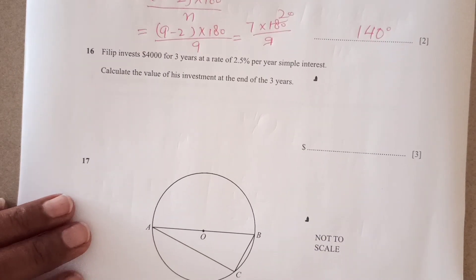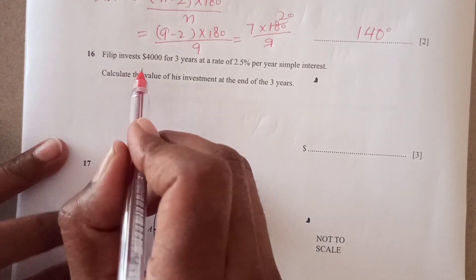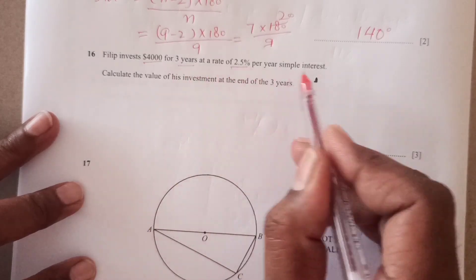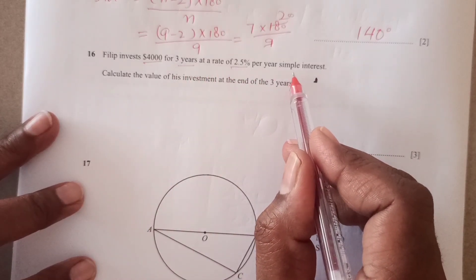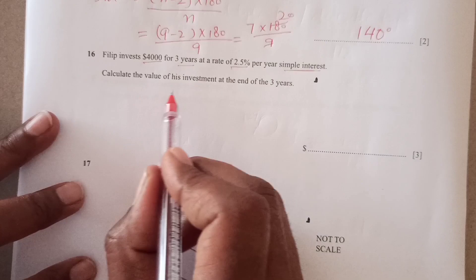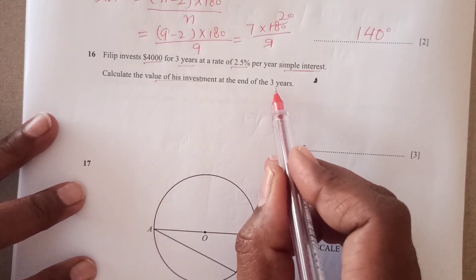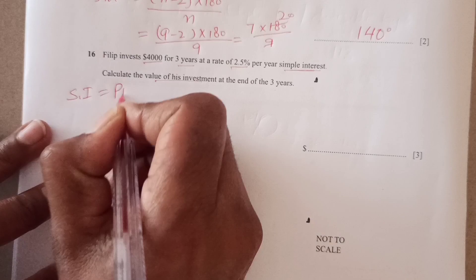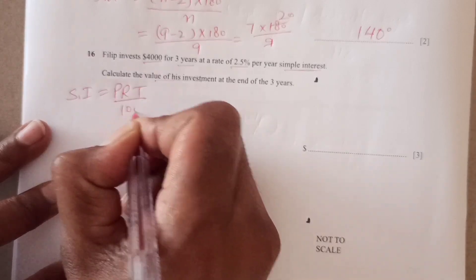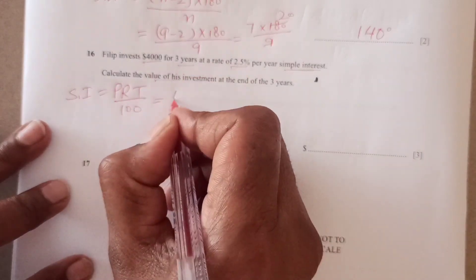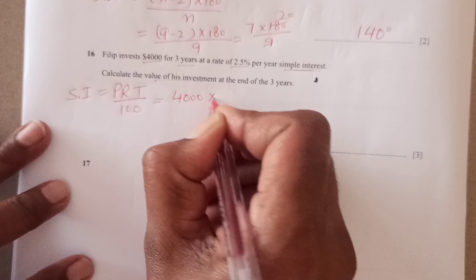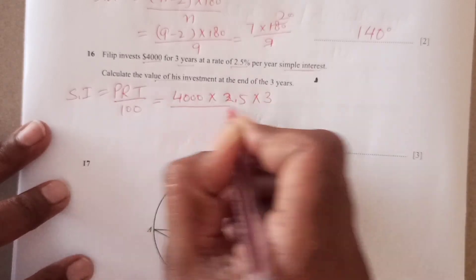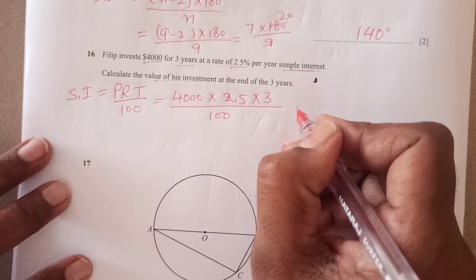Now number 16, Philip invests 4000 for 3 years at rate of 2.5% per year simple interest. Calculate the value of his investment at end of 3 years. First of all, we will calculate simple interest, which is PRT over 100. P is the principal amount, which is 4000, rate of interest is 2.5 and number of years is 3 divided by 100, right?